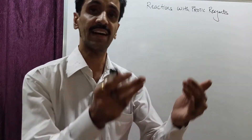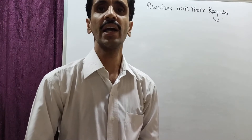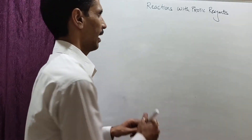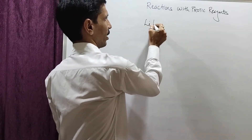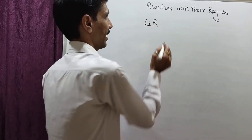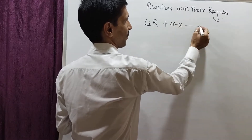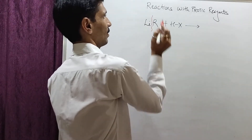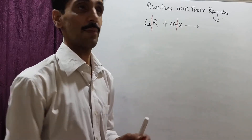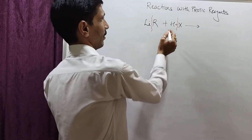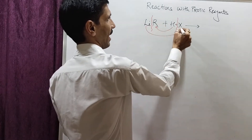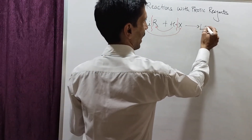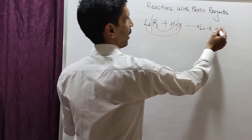Under protic reagents, another example is hydrogen halide (HX). For a highly electropositive metal organometallic compound LiR treated with HX: the bond breaking has H furnishing a proton toward R, forming RH (hydrocarbon), while Li goes with X, forming LiX.